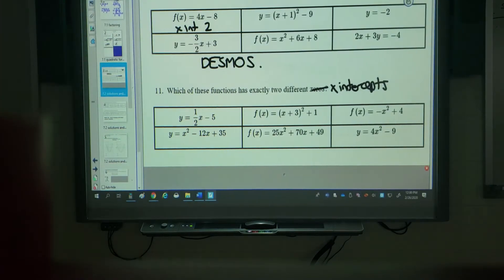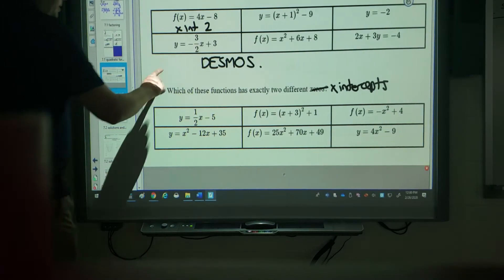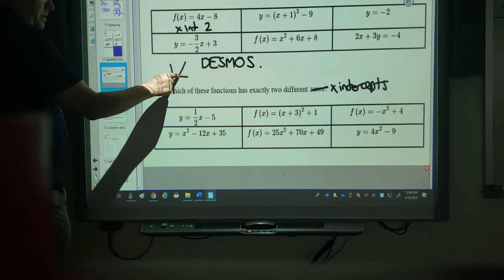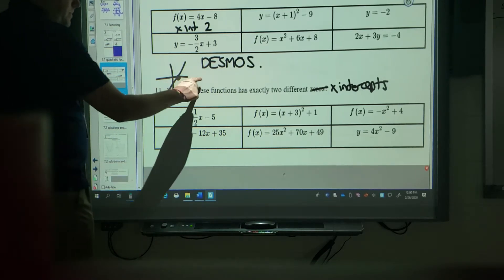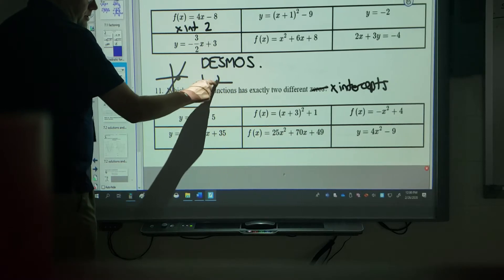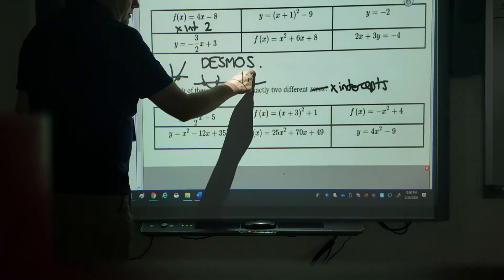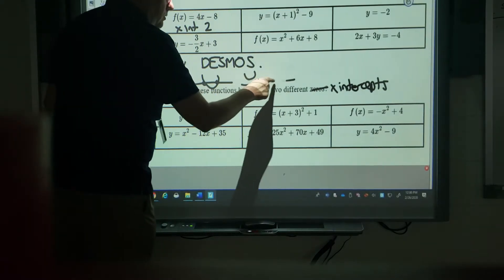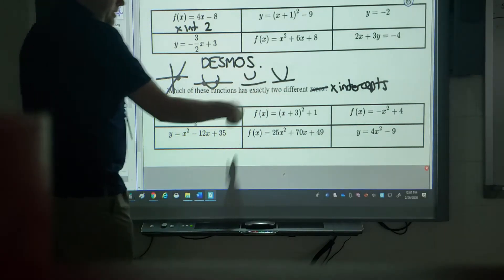So basically I want to type in these questions. I want to see what's actually happening. So the ones that have straight lines just pass through the x-axis just one time. The ones that have curves can pass through two times but they could also pass through zero times. Or they could just touch and just pass one time.